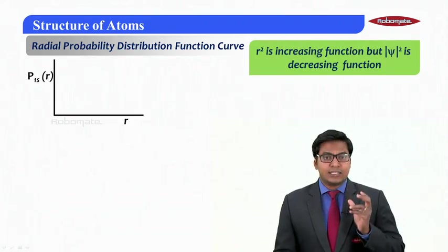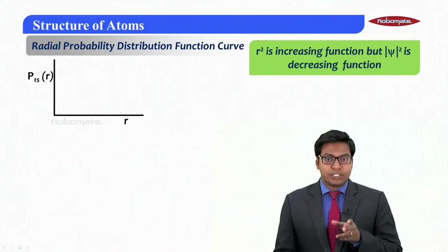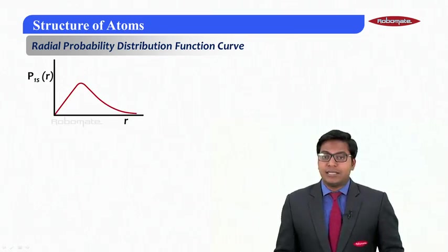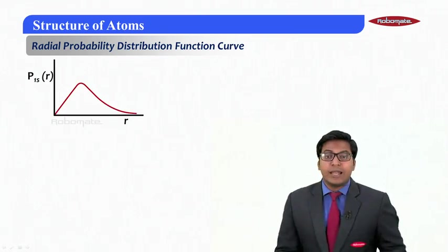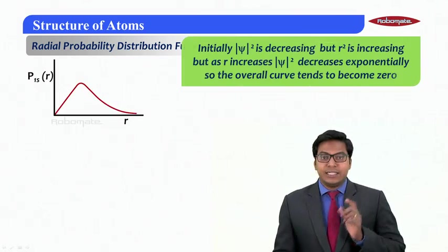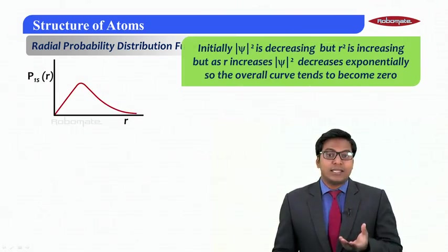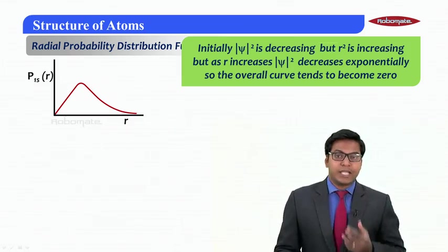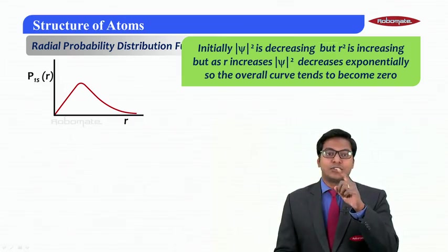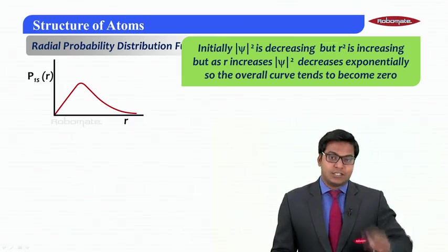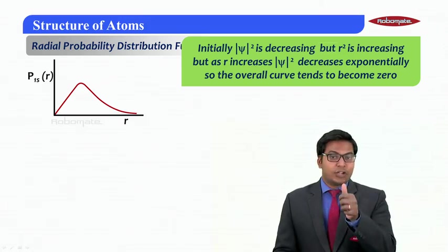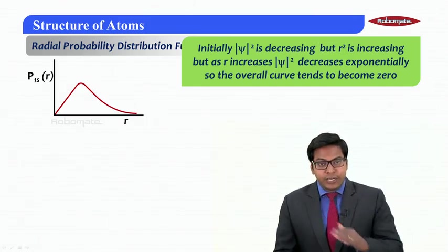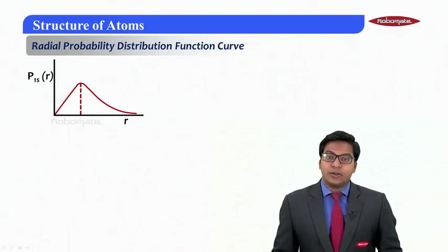As r² increases, ψ² is actually decreasing. There are two functions: one is the r² part and the other one is the ψ² part. The graph looks something like this for 1s orbital. Initially ψ² is decreasing but r² is increasing. As r is increasing, ψ² is decreasing exponentially, so initially it will increase because of the r² and then it decreases because of the ψ². r² is contributing first in the first half of the graph and ψ² is contributing in the second half, and eventually it tends to become zero.